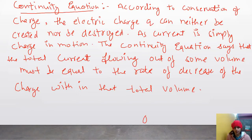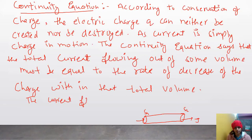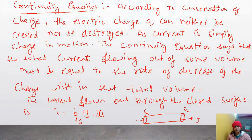We can understand this with an example. Consider a conductor — take a wire. This is region S1, this is region S2. The charge entering from one side and the charge exiting are related, and the current flowing out will be equal to the charge entering. This can also be expressed in terms of current density.